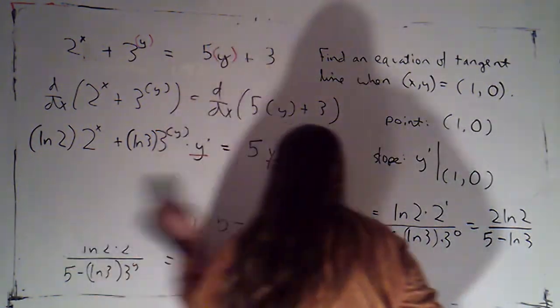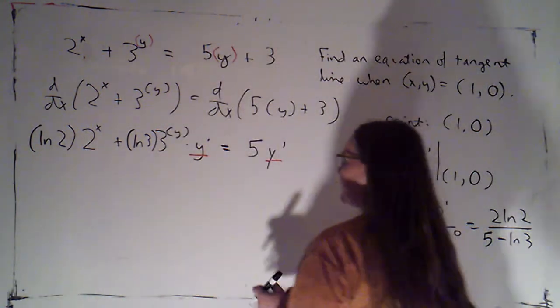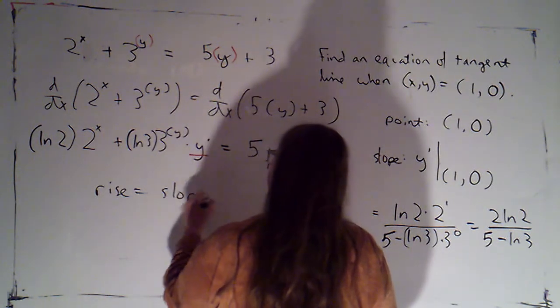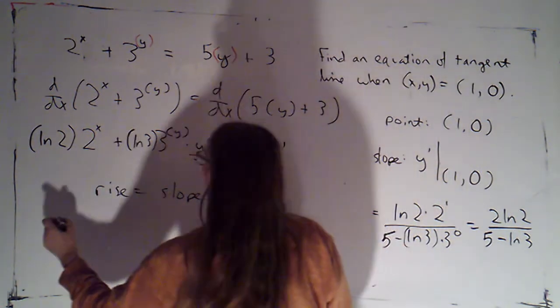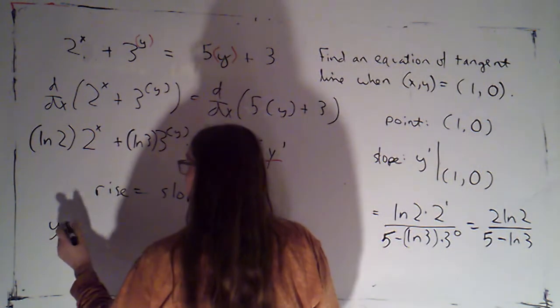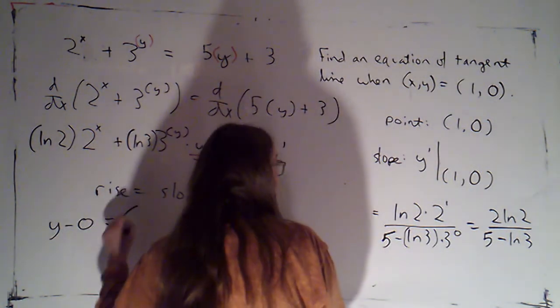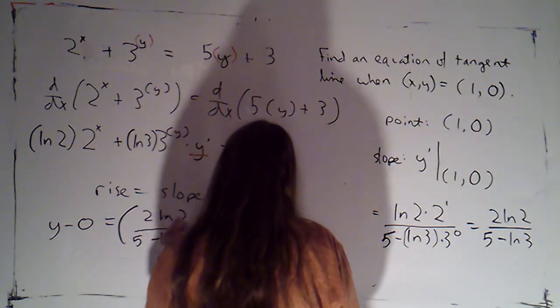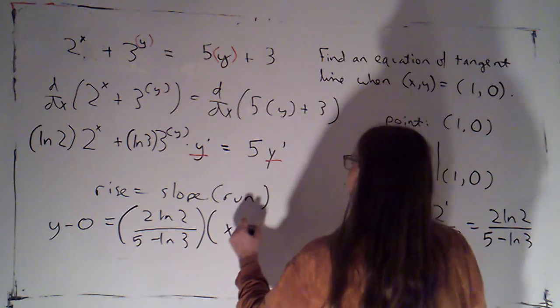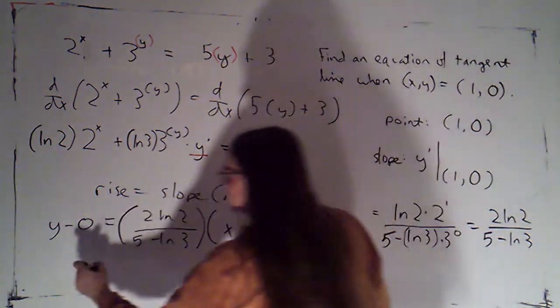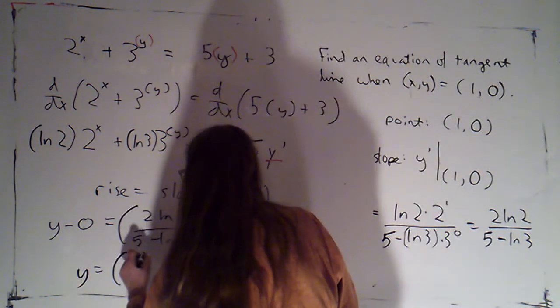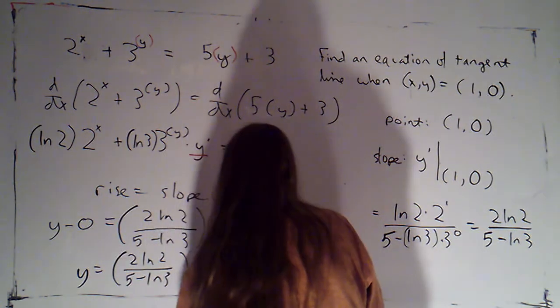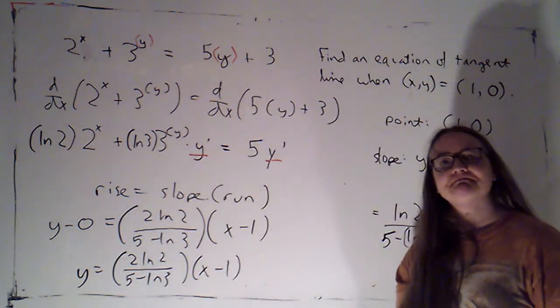So then to get my equation for the line, I'm just going to use point slope form. So rise is equal to slope times run. Rise is going to be y minus 0. Slope is 2 ln 2 over 5 minus ln 3 times the run is x minus 1. So that's just y equals this lovely number, which is our slope times x minus 1. Excellent!